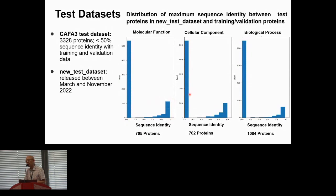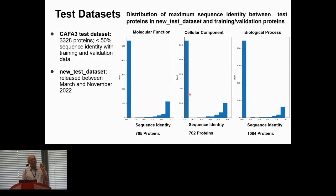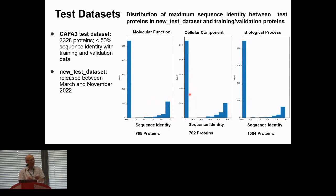For evaluation metrics, we use precision and recall of GO term predictions, and most importantly the F-measure, which is the geometric mean considering both precision and recall. Because F-measure depends on the prediction threshold, we choose the threshold that gives the maximum F-measure for each method. We also use the area under the precision-recall curve to assess overall performance.